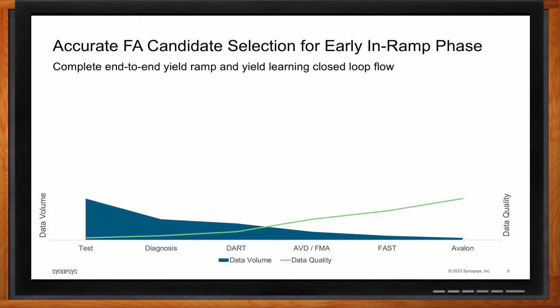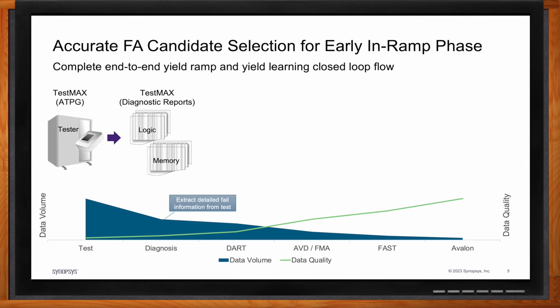Here's an example of how to achieve accurate failure analysis candidate selection for the early InRamp phase — the case where systematic yield problems require getting to root cause quickly to enable high volume manufacturing. The flow starts with test programs running on the tester, keying off full scan ATPG vectors for logic and memory-based vectors for memory. Those vectors provide a failed output scan log, giving you the ability to do diagnostics — reverse engineering, if you will. Once you have a failed output pin during test, you need to find the possible source inside the silicon.